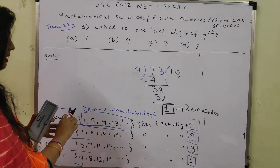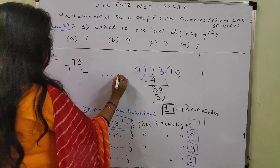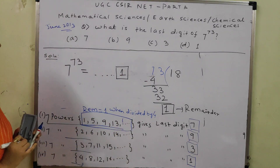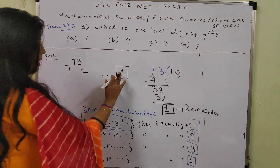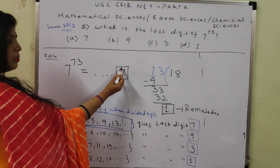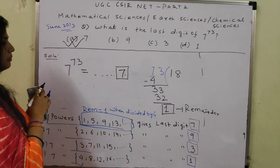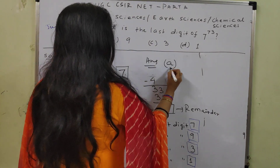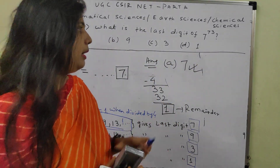So 7 raised to the power 73 will give a number whose last digit is 7. The correct option is option A. This way, any number raised to any power can be resolved if the cycle of last digits repeats.